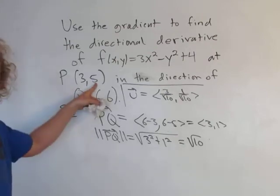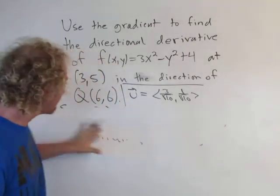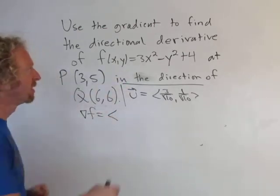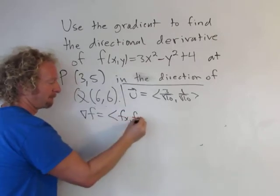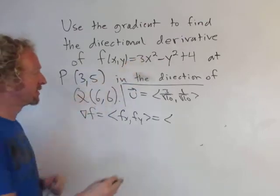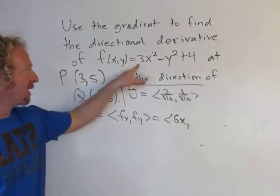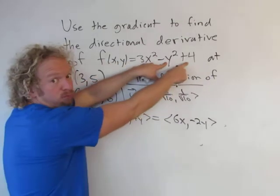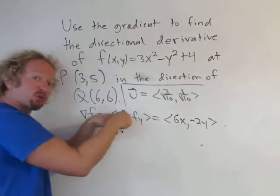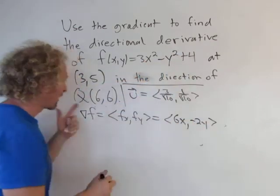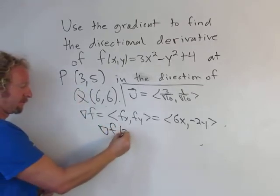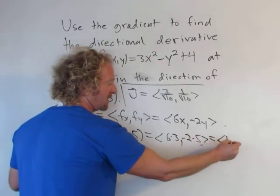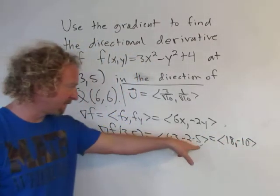Now we just have to find the gradient at (3, 5) and take the dot product. The gradient of f is the vector of partial derivatives: the partial with respect to x, and the partial with respect to y. The partial with respect to x — y is constant — gives us 6x. The partial with respect to y — x is constant — gives us negative 2y. Evaluating at (3, 5): 6 times 3 is 18, and negative 2 times 5 is negative 10. So the gradient at (3, 5) is (18, negative 10).